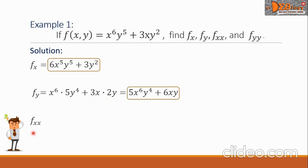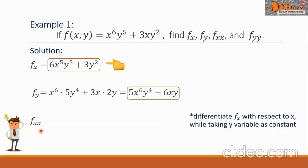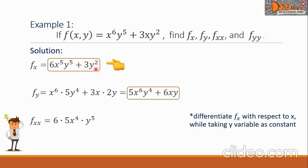Then we have f sub xx, which means we are going to differentiate the function f sub x with respect to x, taking y as constant. The derivative of the first term is 6 times 5x raised to 4 times y raised to 5. The derivative of 3y squared is 0 because y is a constant here. Simplifying, we have 30x raised to 4 times y raised to 5. This is the final answer.